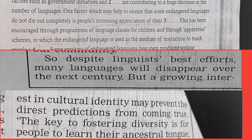Next question: one factor which may help to ensure that some endangered languages do not die out completely is people's increasing appreciation of their [blank]. Endangered languages completely die out nahi hongi — iska ek karan hai logon ka barhta interest. But a growing interest in cultural identity may prevent the direst predictions from coming true. So the answer is cultural identity.